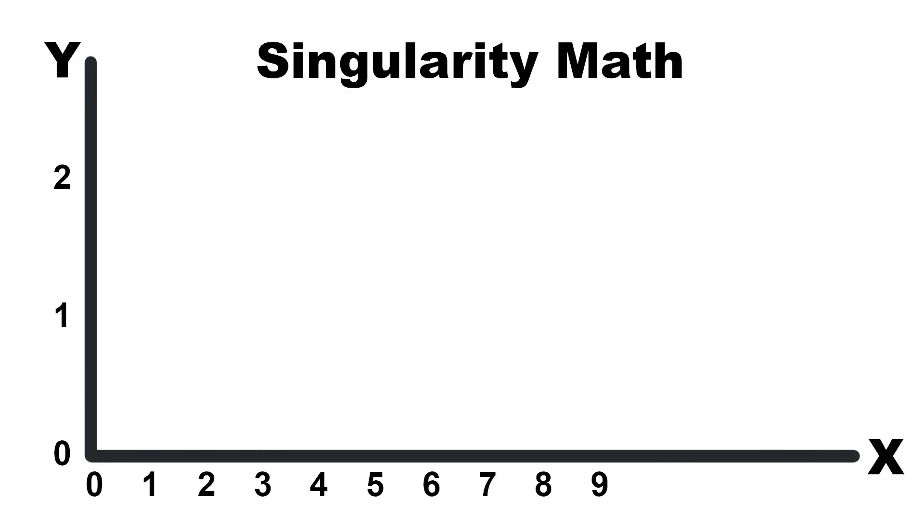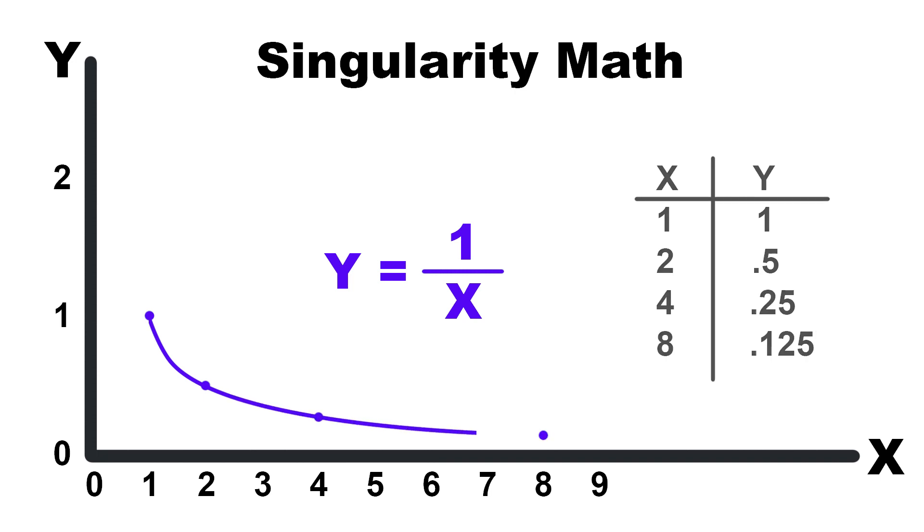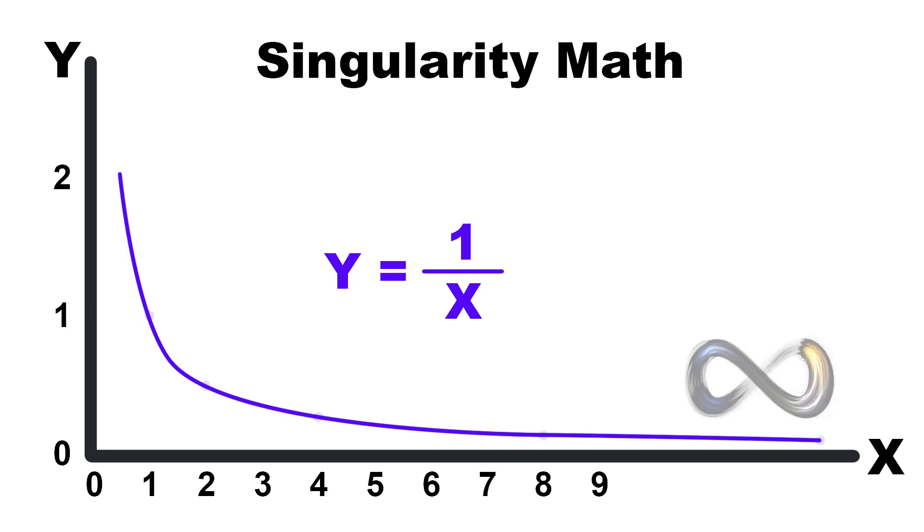A singularity in physics is a point in spacetime where the laws of physics break down. The known equations no longer apply. Density and gravity become infinite. A good illustration of this is the equation y equals 1 over x, where x equals 1, y equals 1. For x equals 2, y is 1 half. If we double x again, we half y again. And we can do this forever. X goes to infinity.